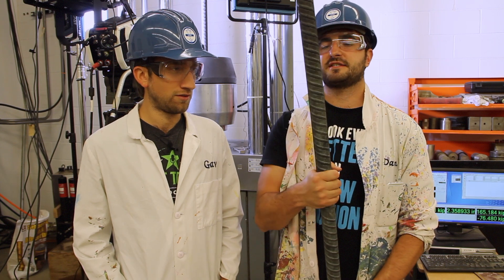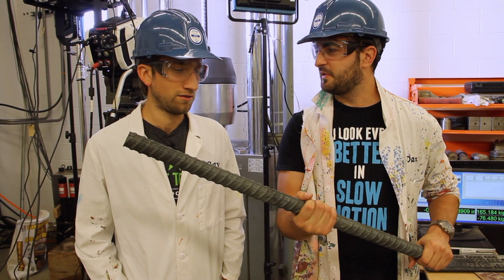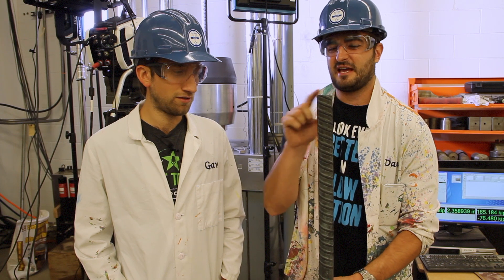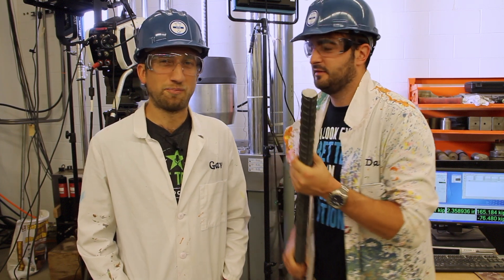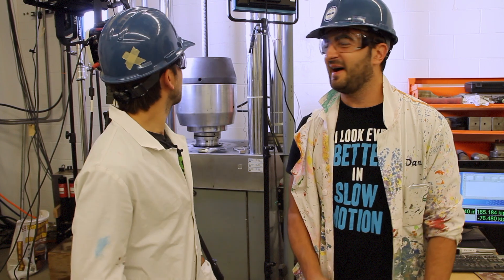What we've got here is a number 11 grade 60 rebar, so it's pure steel beam basically. It's one and a half inches thick, so it's an absolute beast. And we're gonna pull it apart. Yeah, we're gonna rip it apart using this here machine.